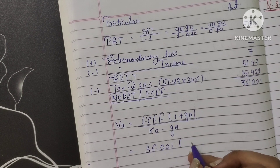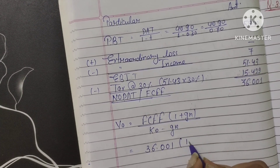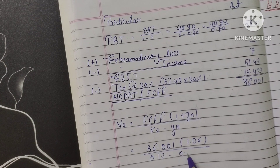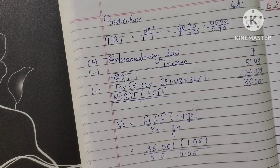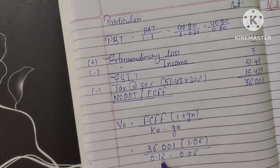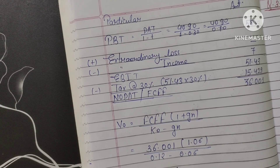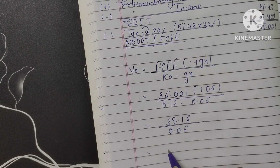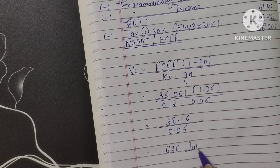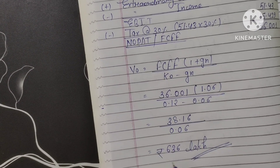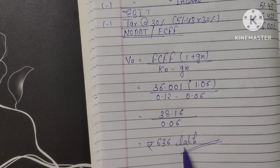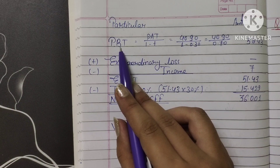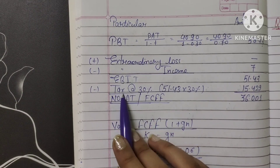Now we apply the DCF formula with growth: free cash flow × (1 + g) divided by (Ke − g). So 36.001 × 1.06 divided by (0.12 − 0.06). That gives us 38.16 divided by 0.06, which equals 636 lakh. So the value of RICO Limited is 636 lakh. To summarize: we calculated profit before tax, removed extraordinary income to get EBIT, applied tax to get NOPAT, then applied the formula.